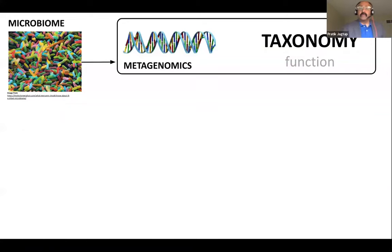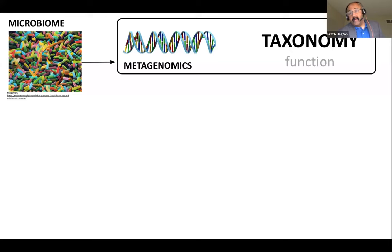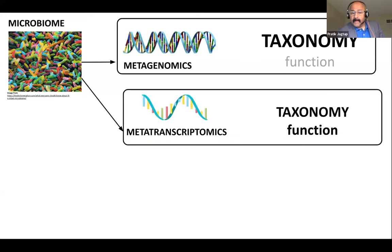Researchers have used two or three different methods. The most prominent is metagenomics, wherein you start with isolating DNA from the environment or gut microbiome sample. The focus there is to understand the taxonomic composition of that particular environment. Bioinformatic methods have been developed and have been quite popular in terms of trying to understand the correlation of taxonomy with the physiology being studied.